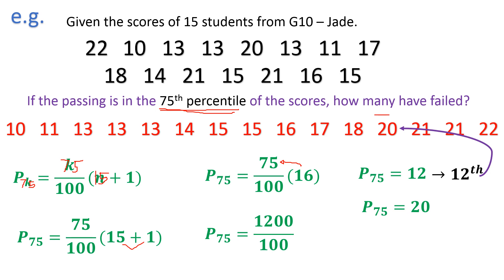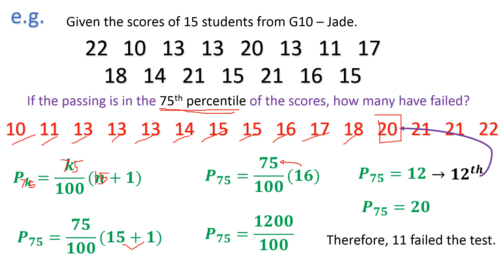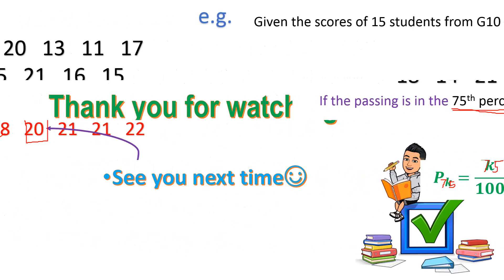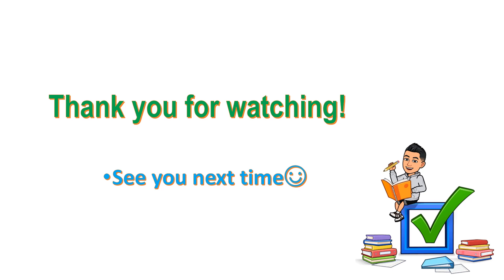Since 20 is the passing score location, we count how many students scored below it: 1, 2, 3, 4, 5, 6, 7, 8, 9, 10, 11. Therefore, there are 11 students who failed the test. This is how we determine the measures of position. Hope you understand. See you next time. Thank you for watching.